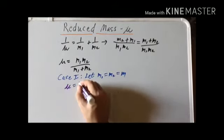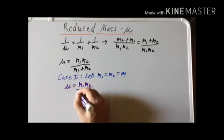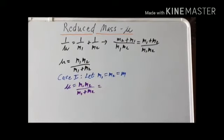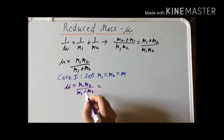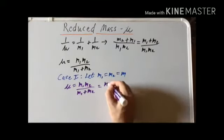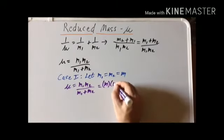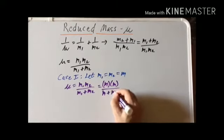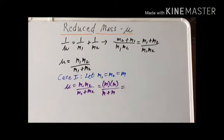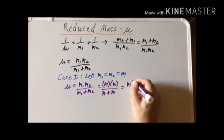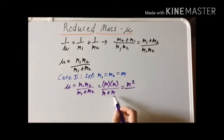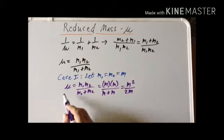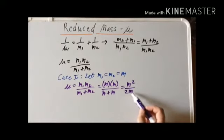Recall it's M1 times M2 divided by M1 plus M2. But both M1 and M2 are equal to M. So the numerator becomes M times M and the denominator becomes M plus M. M times M is M squared for the numerator, and we have 1M plus 1M and the denominator becomes 2M. So the reduced mass is equal to M squared divided by 2M.